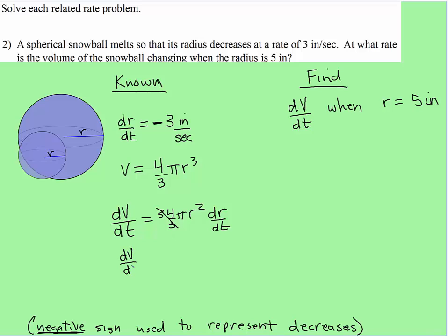So dV/dt is equal to 4 pi. The radius, we want to know the moment that the radius is 5 inches and the rate is decreasing at 3 inches per second and then you simply do the math. 5 inches squared is 25 inches squared. 25 times 4, so we have dV/dt, 25 times 4 is 100 times negative 3.